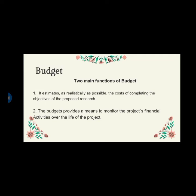The budget has two main functions. First, it estimates as realistically as possible the cost of completing the objectives of the proposed research — the reader will use the budget details to determine whether the proposed research is economically feasible and realistic. Second, the budget provides a means to monitor the project's financial activities over the life of the project. Budgets are more likely to be underestimated than overestimated. To decrease the likelihood of underestimating, it is advisable to check the currentness of figures at the last minute and to build in a hedge against inflation, or increase figures for subsequent years of multi-year proposals by a reasonable percentage.